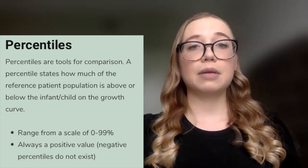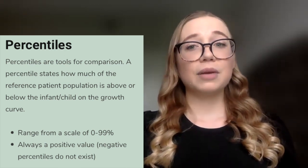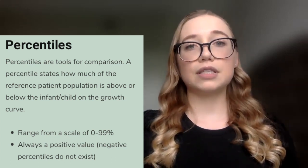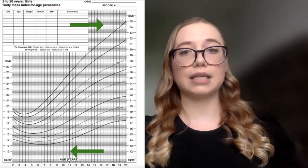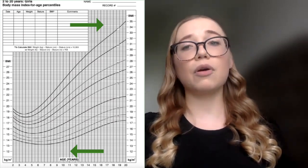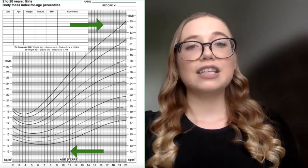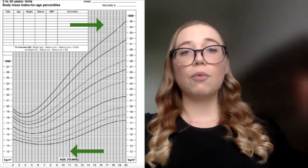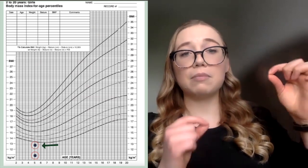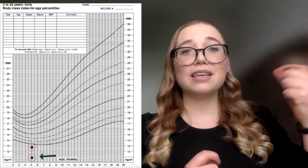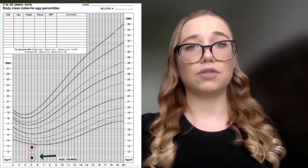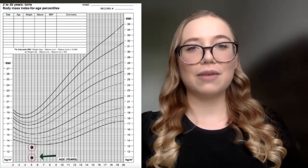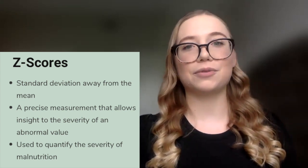Percentiles are always going to be positive measurements, so they're great for telling us general trends, but aren't necessarily great when we get into severities at the extremes. Below the third percentile or above the 97th percentile, we're no longer able to quantify that. If I had two underweight patients — one very below the third percentile and one very, very below — using 'very' and 'very, very' are not good descriptive terms. In clinical practice, we always like to be objective and have specific values we can quantify.